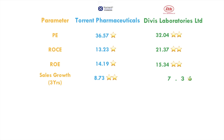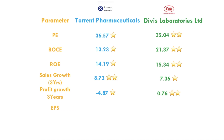Sales growth for three years: Torrent's sales growth is 8% whereas Divi's sales growth is only 7.36%, so Torrent wins here with two stars. Next is profit growth for three years: Torrent's profit growth is minus 4% whereas Divi's is 0.76%, which is on the positive side. So I've given two stars to Divi's there. The next parameter is EPS: Torrent's EPS is 48 whereas Divi's EPS is 49, so I've given two stars to Divi's there.